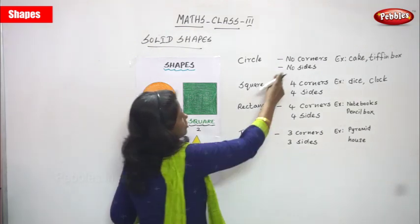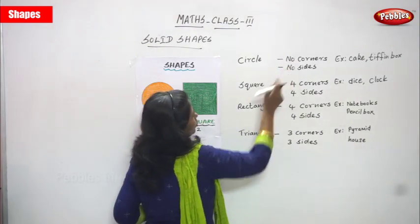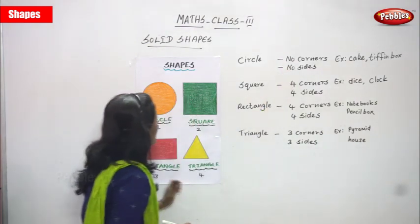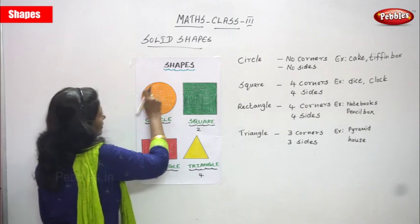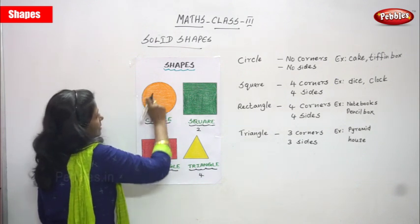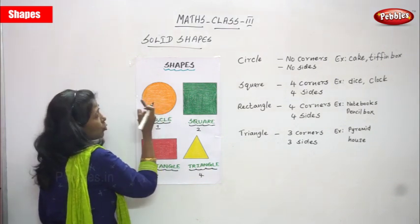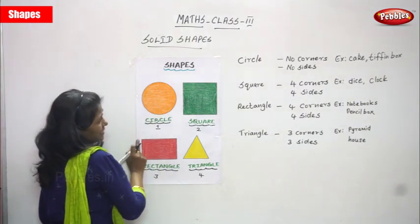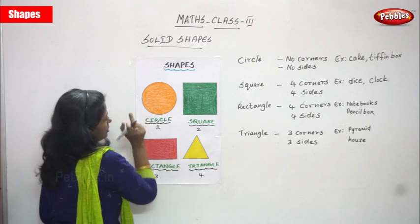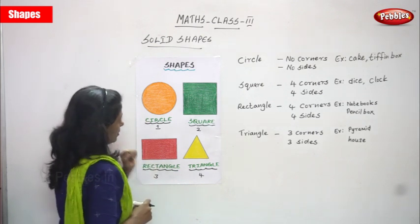Circle — it has no corners and no sides, because it is a curved shape. It has no corners and no sides. That is the first point about circle.